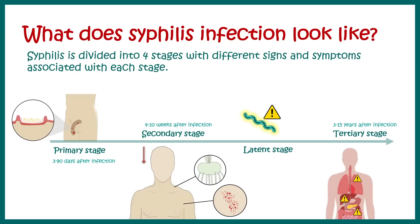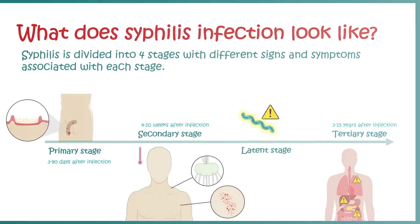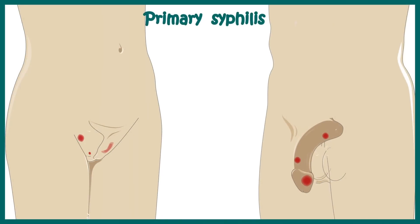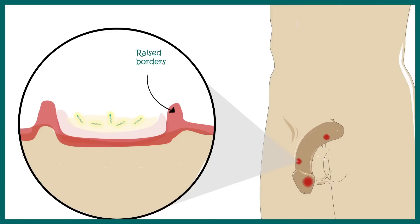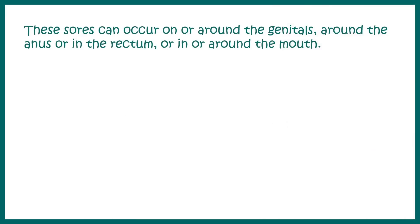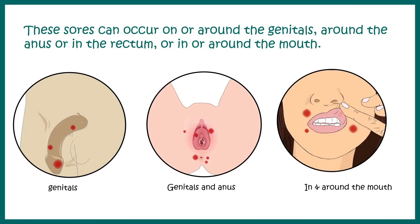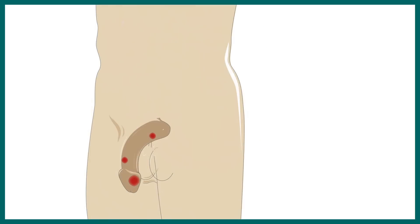In primary syphilis, there are sores at the site of infection, generally found on the external genitalia — the penis or vagina. These sores are known as chancres and are generally painless, so they often go unnoticed. Zooming into the chancre, it has a raised border, a hard base, and a fluid-filled substance hosting a lot of Treponema bacteria. Contact with the chancre can spread the bacteria. These sores can also occur in the anus and in or around the mouth.